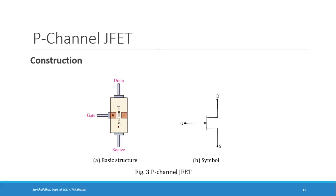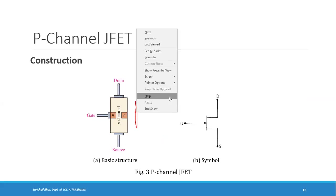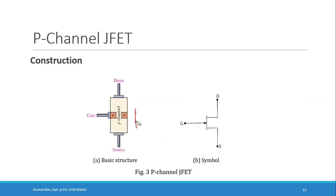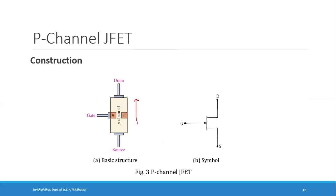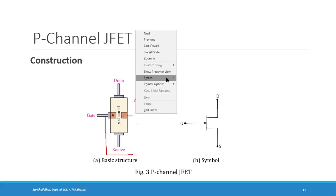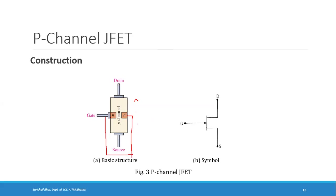Now coming to P-channel JFET — it is similar, but the channel is of P-type. Holes flow from the source to the drain, so the direction of the drain current ID is from source to drain. In the P-channel, two N-type regions are diffused, and both are connected to the gate, though for simplicity only one is shown. The gate in a P-channel JFET is of N-type.